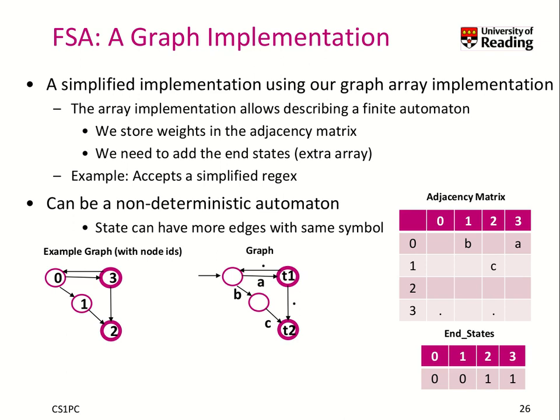We can also have separately our end states, which is just an array that says if a state is an end state or not. We have state 2 and state 3 here, which are end states, so they are marked as being end states.